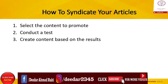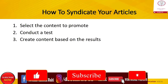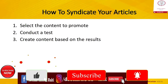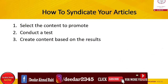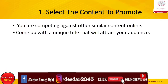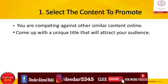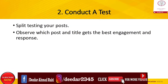Always remember that you are competing against posts which are similar to yours. Therefore, you need to come up with a title that will attract your audience. The second step is to conduct a test — this can be done by split-testing your posts and observing which posts and titles get the best response. Last but not least, create your content based on your test results. You can use your split test results to guide the content you should be creating, so you are not wasting your resources and you know the content you syndicate has an audience to generate traffic to your site.